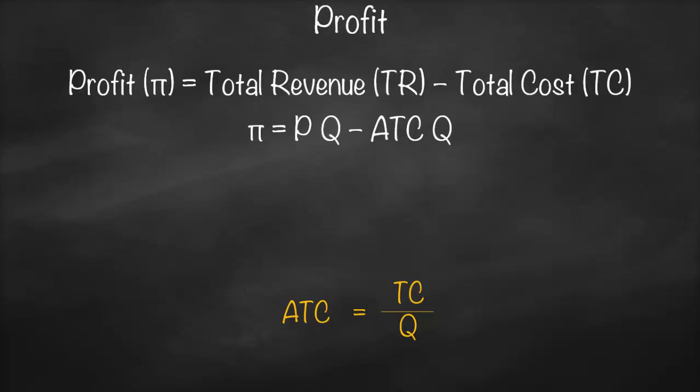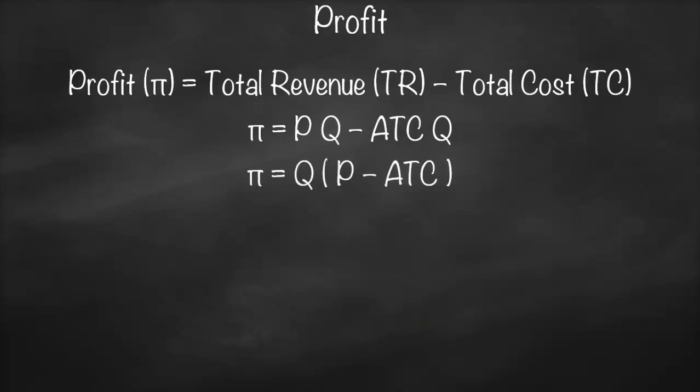Therefore, my profit level is total revenue — which is price times quantity — minus my total cost, which is average total cost times quantity. Looking at this formula, can we take quantity as a common factor? Yes we can. Therefore, our profit will be quantity multiplied by price minus average total cost.